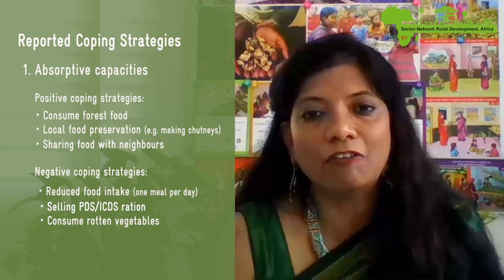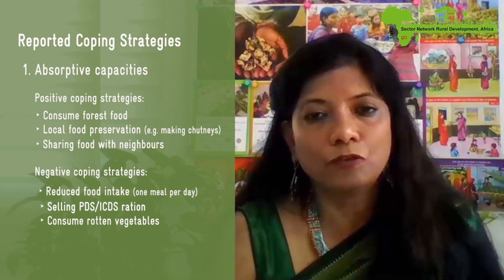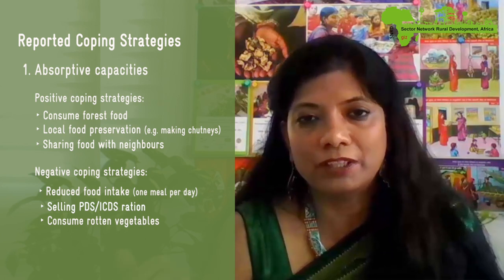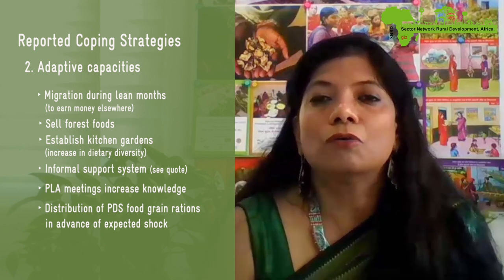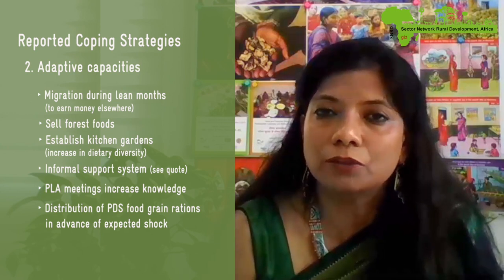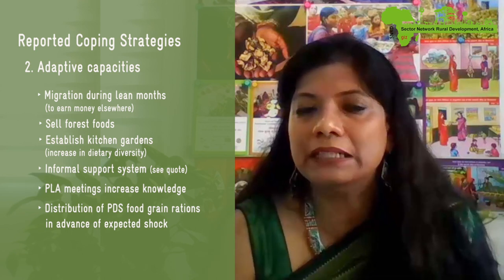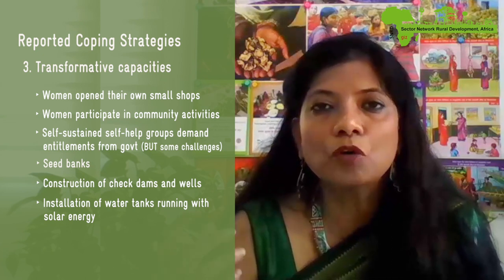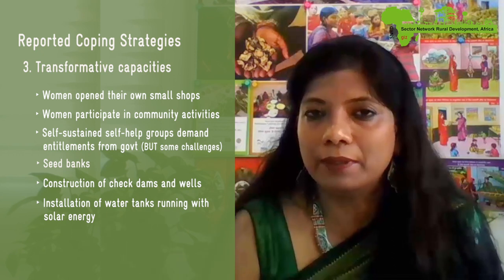Some negative strategies were also found — including stealing of PDS food or ICDS food. The Public Distribution System and the packed ration given by the Department of Women and Child Development for pregnant women were targeted. Adaptive strategies included migration, homestead gardens, and promoting dietary diversity knowledge, as well as government-increased PDS coverage during droughts.